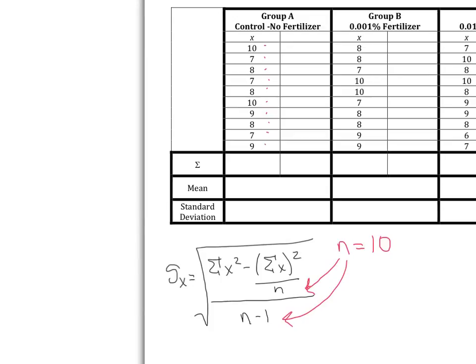Now I already know a couple of the different things that are going to go into my equation. Another thing I need to find is the sum of X. Here are my X values right here. I literally just have to take 10 plus 7 plus 8 plus 7 plus 8 plus 10 plus 9 plus 8 plus 7 plus 9. If I add those things all up, I'm going to get 83. So now I know here my sum of X is 83.